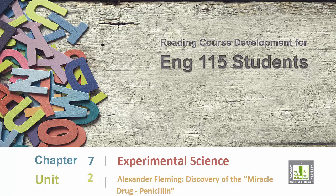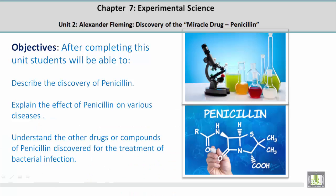Reading Course Development for English 115 Students, Chapter 7: Experimental Science, Unit 2 — Alexander Fleming: Discovery of the Miracle Drug, Penicillin. Objectives: After completing this unit, students will be able to describe the discovery of penicillin, explain the effect of penicillin on various diseases, and understand the other drugs or compounds of penicillin discovered for the treatment of bacterial infection.